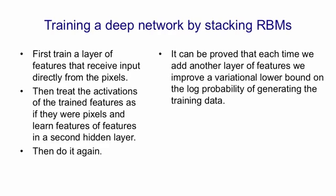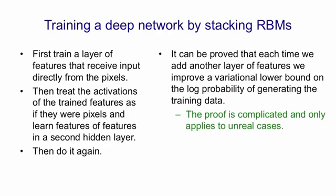It can be proved that each time we add another layer of features, we improve a variational lower bound on the log probability that some combined model would generate the data. The proof is actually complicated, and it only applies if you do everything just right, which you don't do in practice. But the proof is very reassuring, because it suggests that something sensible is going on when you stack up restricted Boltzmann machines like this.